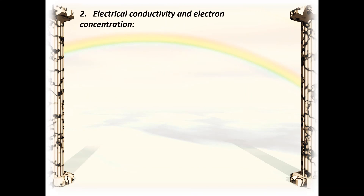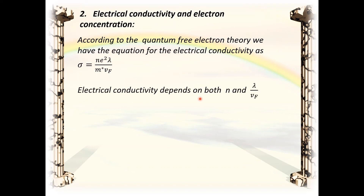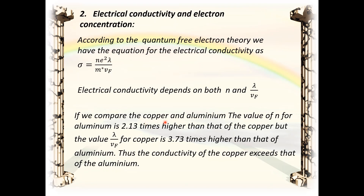Second success — electrical conductivity and electron concentration relation: According to quantum theory, σ = ne²λ/(m*V_F), so conductivity depends both on n and on the ratio λ/V_F. Comparing copper and aluminium: n for aluminium is 2.13 times higher than copper, but the λ/V_F ratio for copper is 3.73 times higher than aluminium. Thus the conductivity of copper exceeds that of aluminium, correctly explaining the experimental observation.